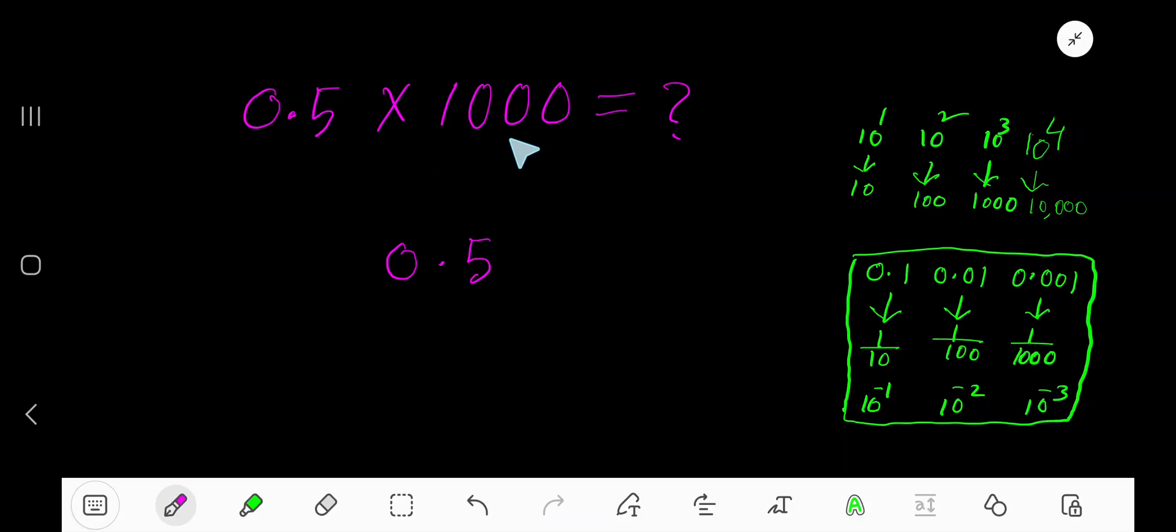0.5 times 1,000. Look, 10, 100, 1000, 10,000, these are called powers of 10, of course, positive.